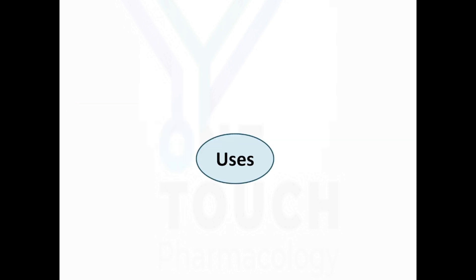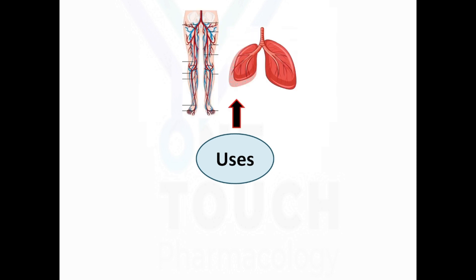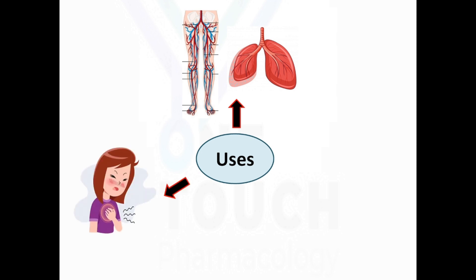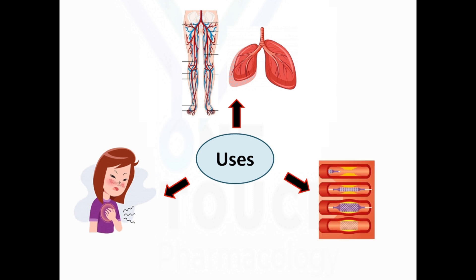The uses of heparin: heparin is most commonly used in the management of deep venous thrombosis and pulmonary embolism, in the management of unstable myocardial infarction, and in coronary angioplasty.